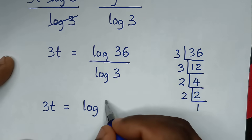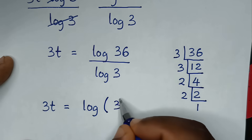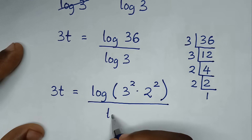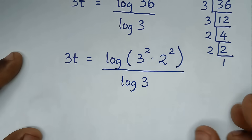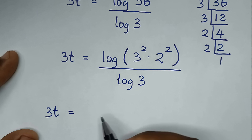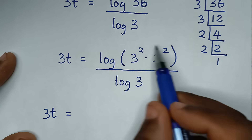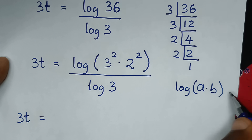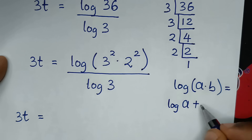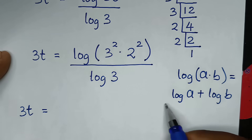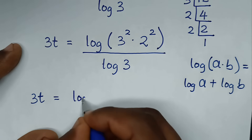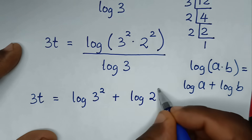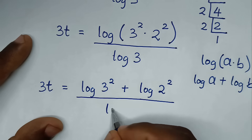So the prime factors of 36 are 3 times 3, which is 3 squared, times 2 times 2, which is 2 squared, all over log of 3. Then in the next step, 3t equals log of 3 squared times 2 squared. This part is in the form of log of a times b, which equals log of a plus log of b. So applying this rule, it will be log of 3 squared plus log of 2 squared, all over log of 3.